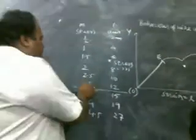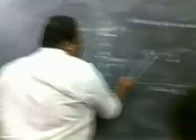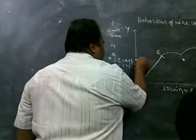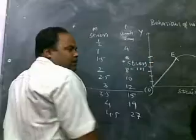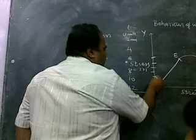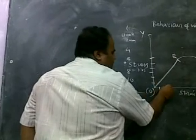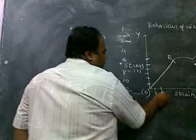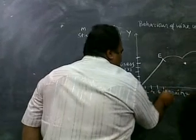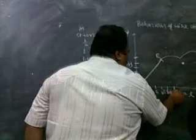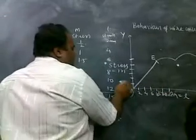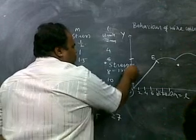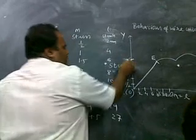This is plotted up to 3 kg. Half kg gives 2 mm; 1 kg gives 4 mm; 1.5 kg gives 6 mm; 2 kg gives 8 mm; 2.5 kg gives 10 mm; 3 kg gives 12 mm. Up to 3 kg the extension increases by a fixed 2 mm per half kg — this is the straight line region. A straight line means stress is directly proportional to strain within the elastic limit.